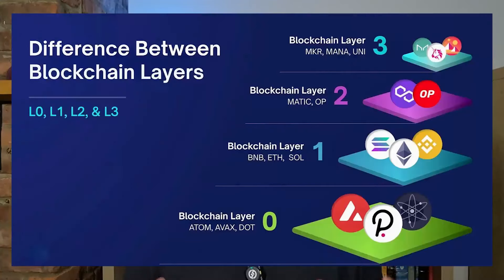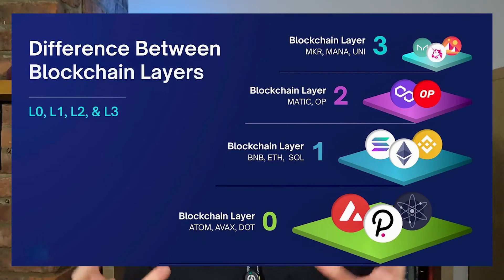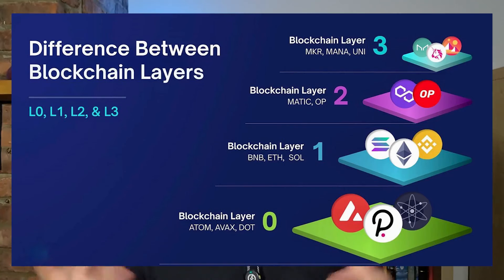So we've looked at layer 0, 1, 2, and 3 in this video. Layer 0 is the base layer allowing every blockchain to operate. Layer 1 is the foundation or implementation layer with the largest cryptocurrencies that have their own blockchain, such as Bitcoin, Ethereum, etc. Layer 2, or L2 solutions, is the additional layer that sits on top of layer 1 to increase scalability primarily — a third-party integration with layer 1 to essentially improve it. And finally, layer 3 is the application layer or user interface where the DeFi apps and services sit.